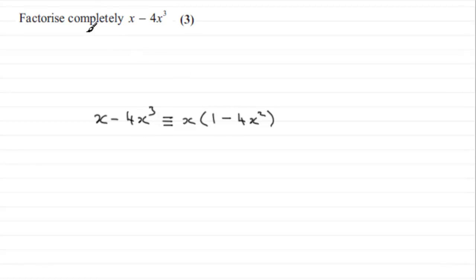Okay? But it does say factorise completely, so that does seem to suggest that it's going to factorise further. Well, this factor here, 1 minus 4x squared, does factorise further.